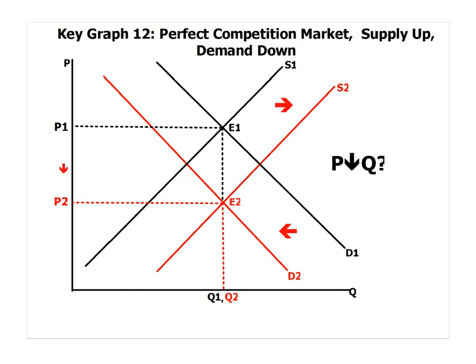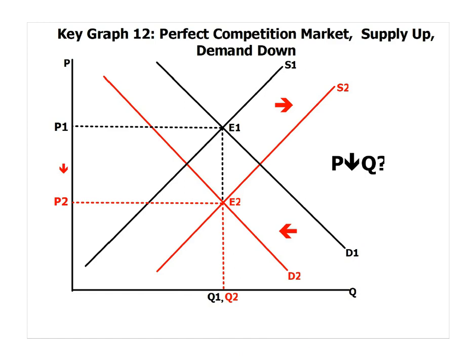In key graph 12, we see a split in which direction the curves are going. Supply is shifting to the right and demand is shifting to the left. Maybe there's a more innovative way to produce this product, but demand just isn't there — taste and preference hasn't shifted, and the market has actually decreased. So quantity is indeterminate in this scenario, but the price level is falling. The supply curve shifting out means we're producing more — which would normally lead to a price fall — and the demand curve shifting inward also leads to a price fall. So price level falls, quantity is indeterminate in key graph 12.